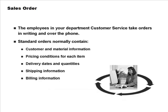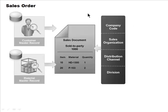We're looking at the sales order, which contains customer and material information, pricing conditions for each item, delivery dates and quantities, shipping information, and billing information. These are standard things you would expect in any sales document.